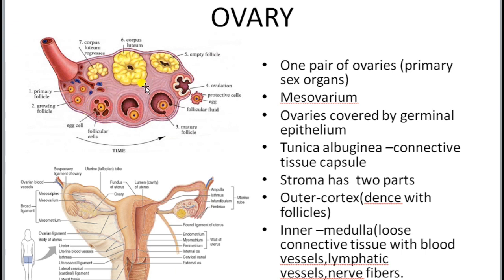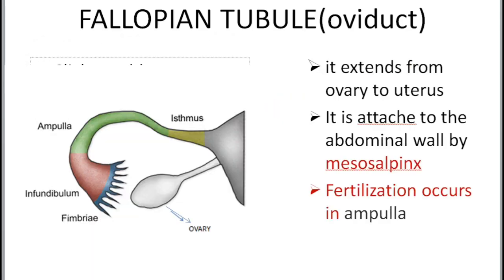The inner part, known as the medulla, is a loose connective tissue which consists of blood vessels, lymphatic vessels, and nerve fibers. One pair of ovaries are present and these are known as the primary sex organs.